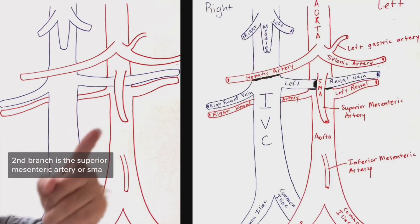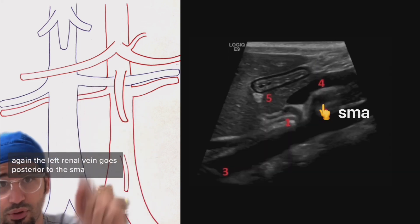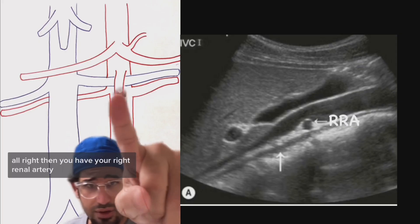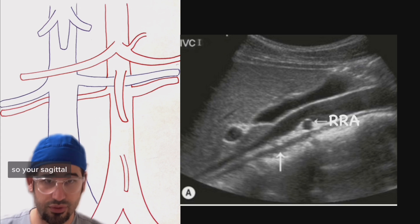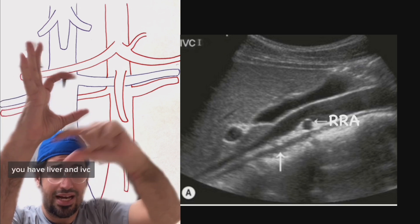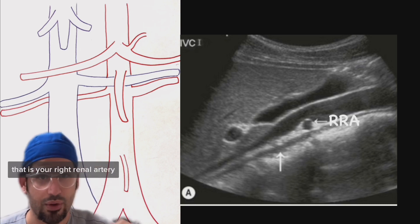Second branch is the superior mesenteric artery or SMA. Again, the left renal vein goes posterior to the SMA. Then you have your right renal artery. Very important, the right renal artery goes posterior to the IVC. So on your sagittal you have liver and IVC, and then behind the IVC you have a little circle that is your right renal artery, very important to know.